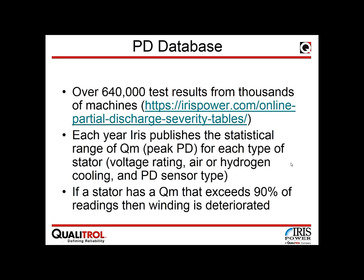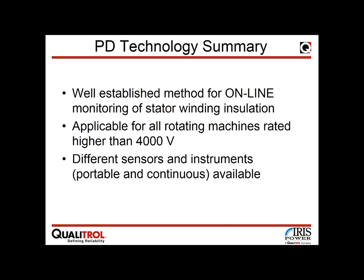Since there is no standard regulating how much PD is too much, the severity tables serve as a useful guideline. After the first test, a user can immediately determine whether their machine falls in a high-reading group or an average PD results group. Partial discharge technology is well established, having been used for 55–60 years in various forms, and is applicable to rotating machines rated higher than 4000 volts.